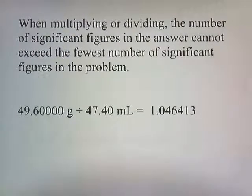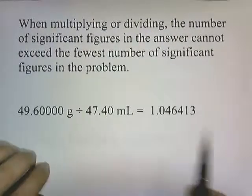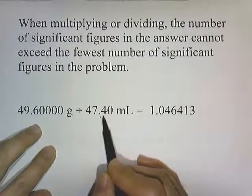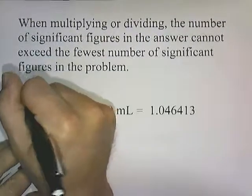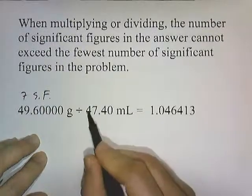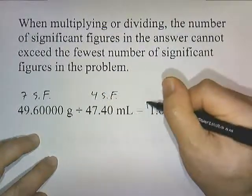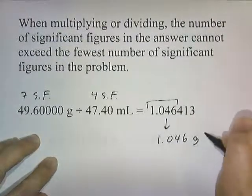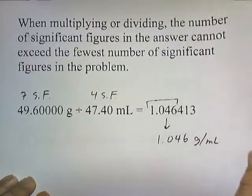That's addition and subtraction. What about multiplication or division? When multiplying or dividing, the number of significant figures in the answer cannot exceed the fewest number of significant figures in the problem. For example, calculating density: 49.600 divided by 47.40 gives a large number on the calculator. 49.600 has five significant figures and 47.40 has four, so our final answer can only have four significant figures: 1.046 grams per milliliter.